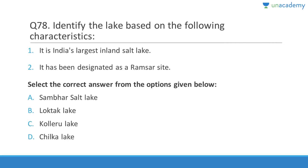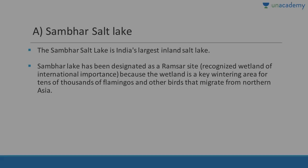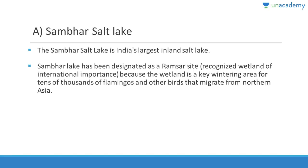Question 78: Identify the lake — it is India's largest inland salt lake. Answer is Sambhar Lake. It is very close to Jaipur city and has been designated as a Ramsar site — a recognized wetland of international importance. It is a key wintering area for tens of thousands of flamingos and other birds that migrate from northern Asia.